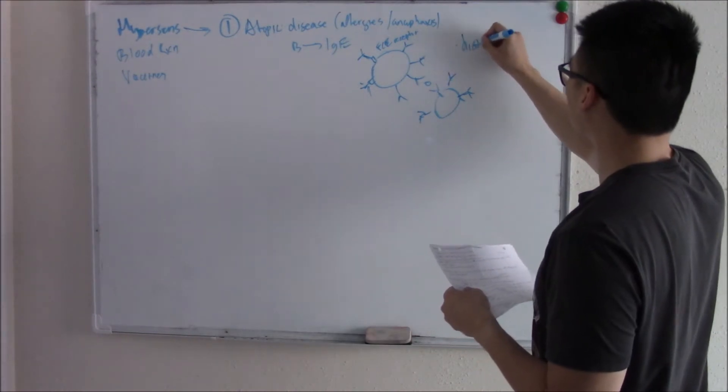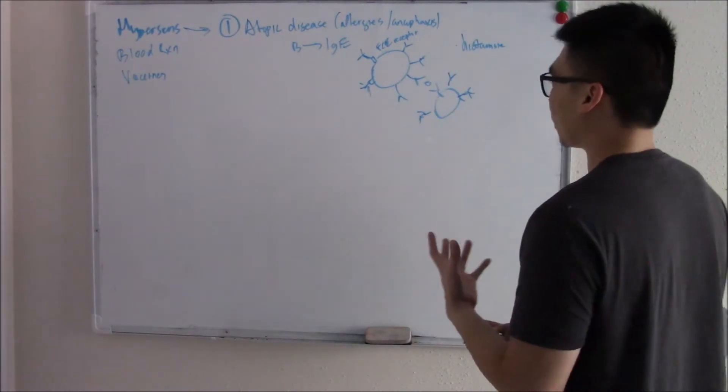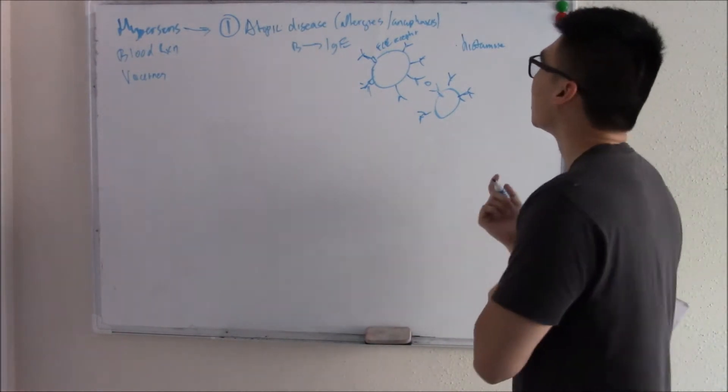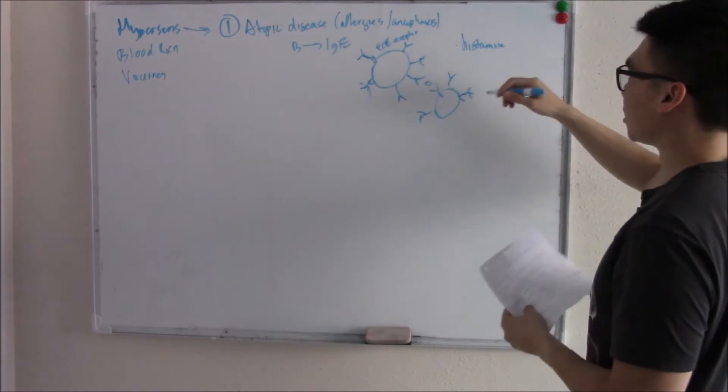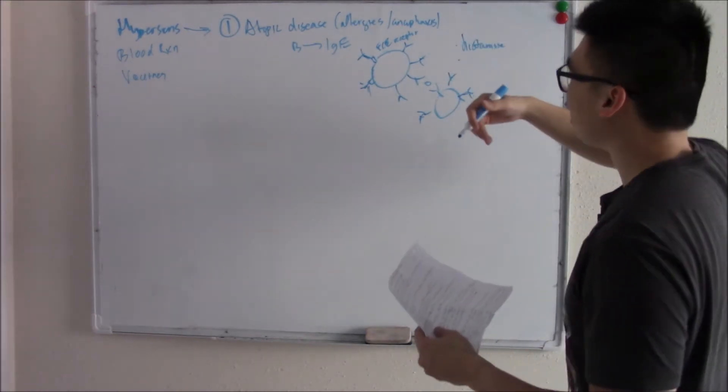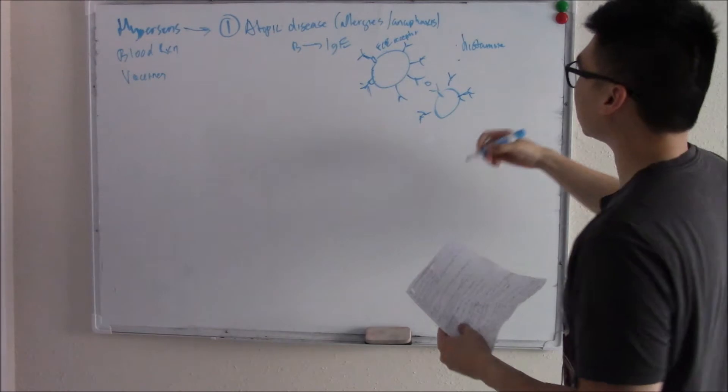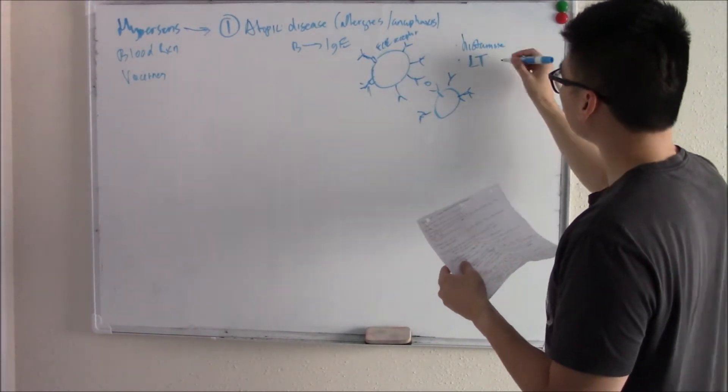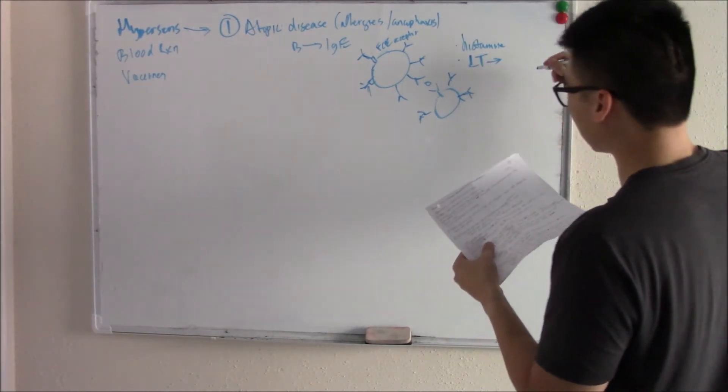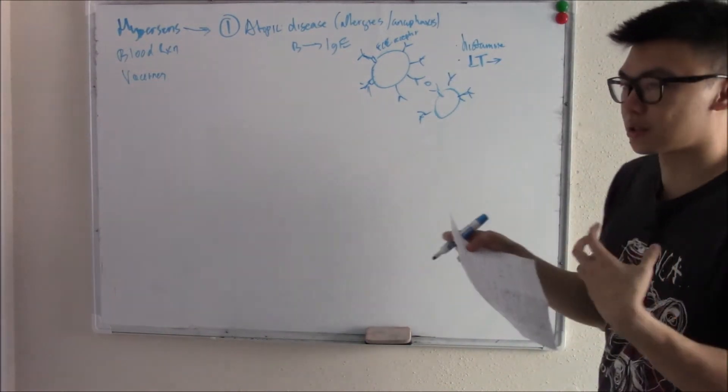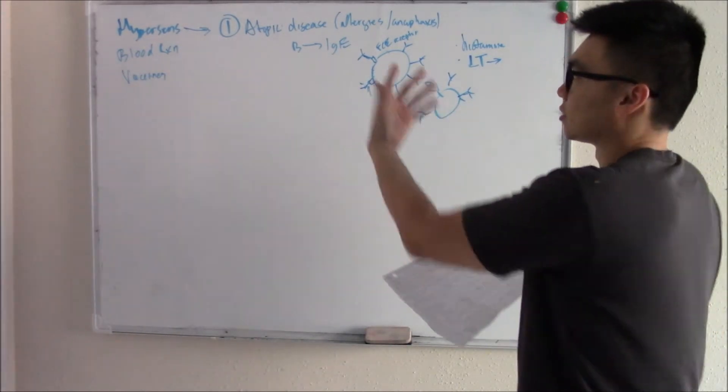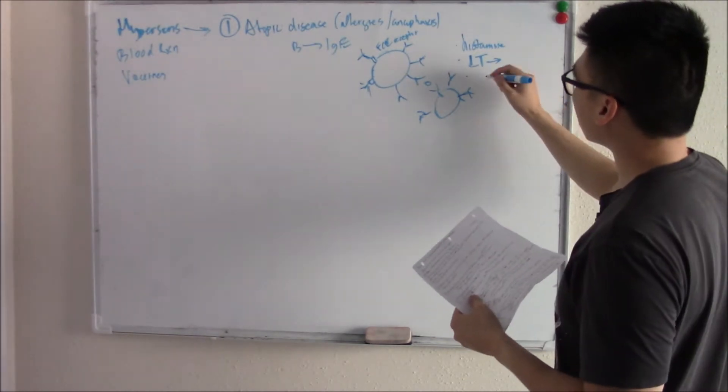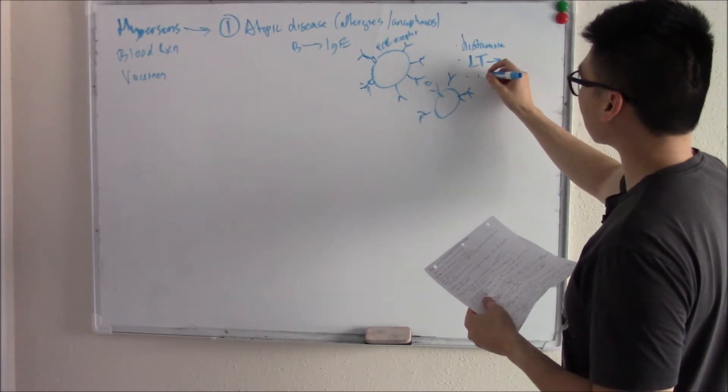You release histamine, you get that massive vasodilation. If someone has like a giant peanut allergy, they have a swollen lip or tongue or throat, massive amounts of histamine. And that can trigger your arachidonic pathway and release your leukotrienes, prostaglandins.